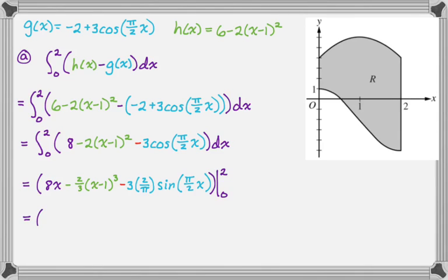So first we're going to plug in two. So that gives me 16. And then when I plug two into this, two minus one is one. One cubed is one. So we just get minus two thirds. And then I'm going to write minus six over pi. And I'm going to write the sine of pi for now. I actually know the sine of pi is zero. So that's going to be nice.